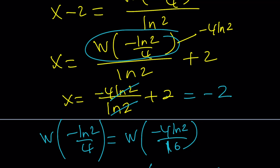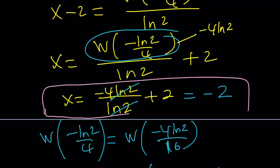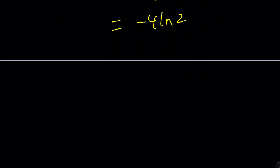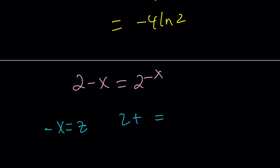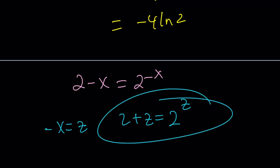Did we do all this work to find negative 2? Well, is that the only solution? Are there any other solutions? Negative 2 is one of the solutions and it's kind of obvious — you can find it even by guess and check. If you set negative x equal to z, you would get 2 plus z equals 2 to the z. And this would probably be easier to solve, because z equals 2. So x equals negative 2 is a solution. But that's not the only solution.